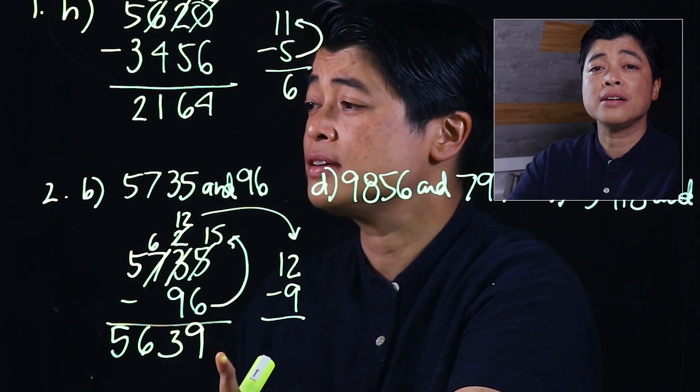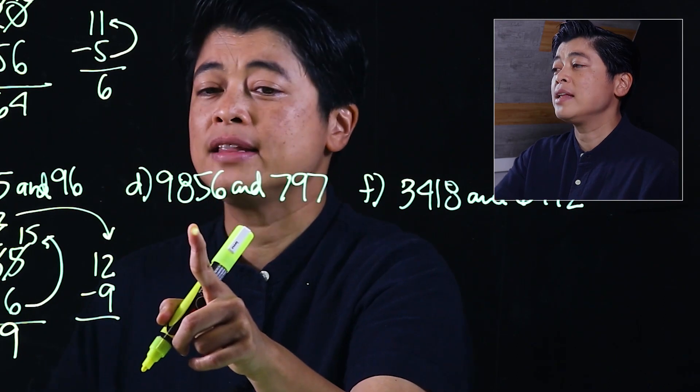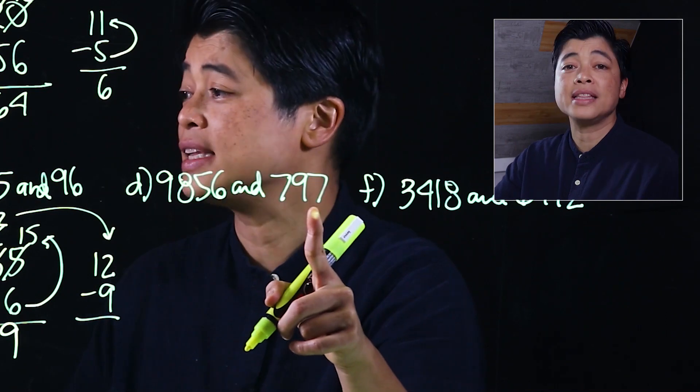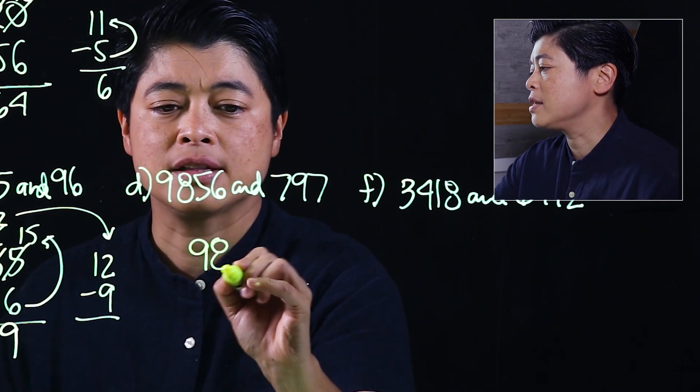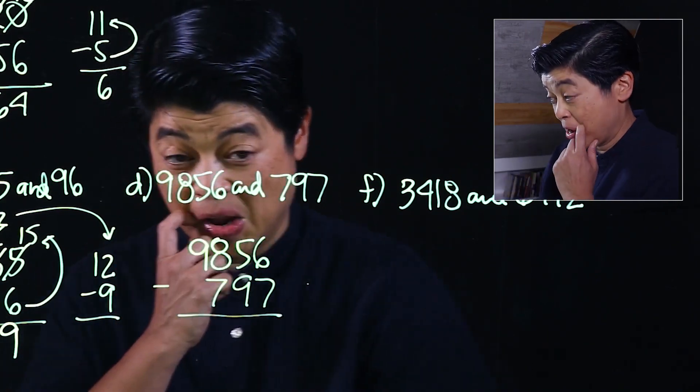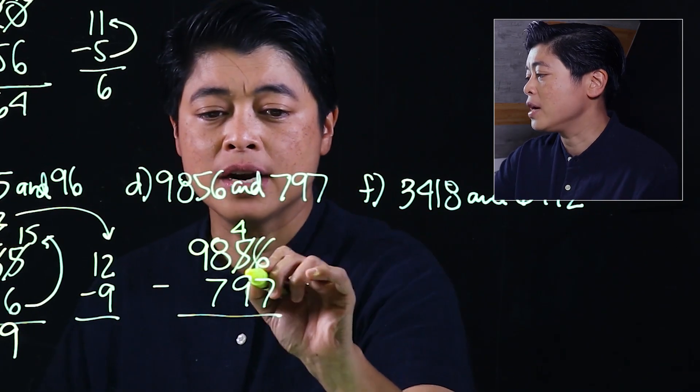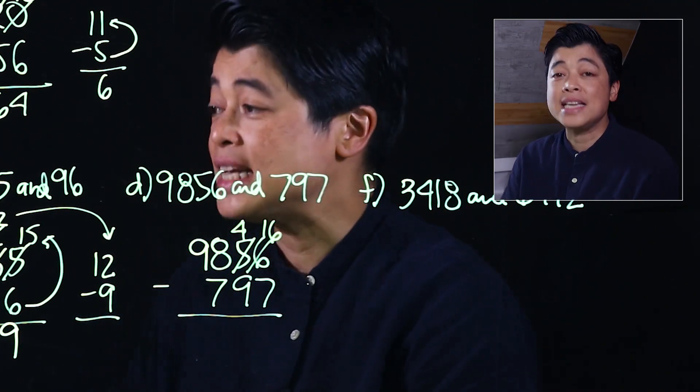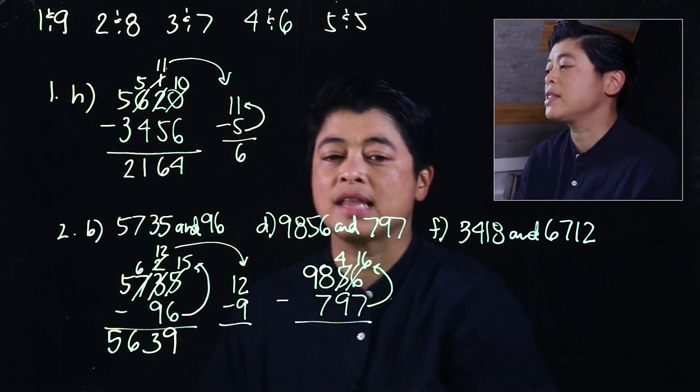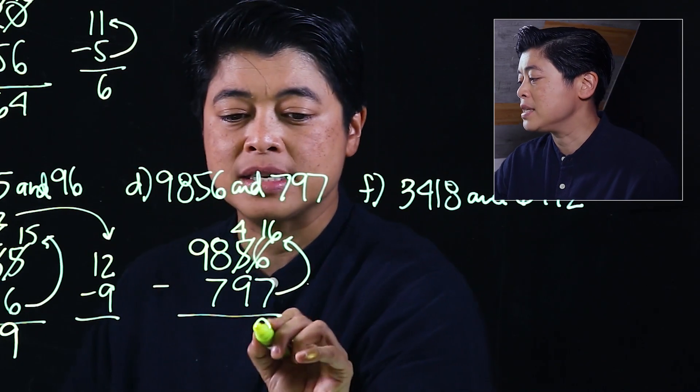The next problem is the difference of 9856 and 797, so 9856 minus 797. Same approach: cannot take away 7 from 6. Borrow makes that 4, makes that 16. We think from 7, we need 3 more to get to 10 and we need another 6 to get to 16, which means that's 9.